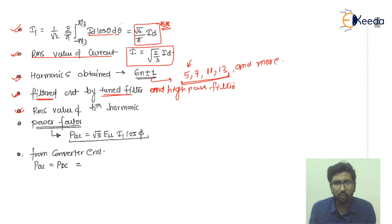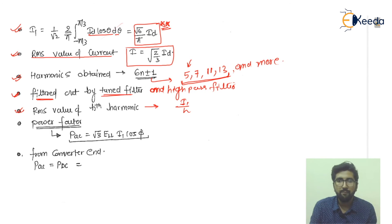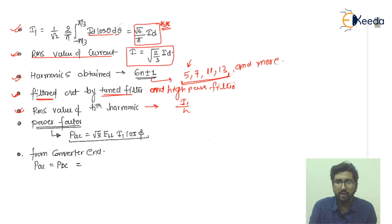The RMS value of the hth harmonic is i1 divided by h, where i1 = (√6 / π) × id. So the RMS value of the hth harmonic is (√6 / π) × (id / h). For example, for the 13th harmonic, h equals 13.